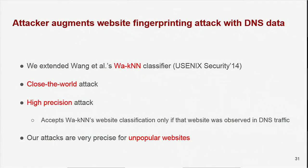To that end, we extended the WAKNN nearest neighbors classifier from a USENIX Security paper in order to come up with our two attacks, called the closed-world attack and the high precision attack. In the interest of time, I'll only talk about our high precision attack. In our high precision attack, we accept the WAKNN's website classification only if that website was also observed in DNS traffic. This addition of DNS data makes our attacks more precise. It turns out that our attacks work very well for unpopular websites — websites that are lower on the Alexa scale — and this is problematic for dissident websites such as WikiLeaks.